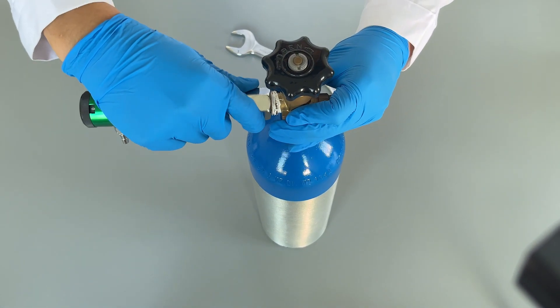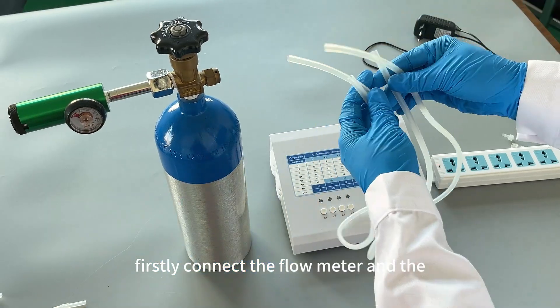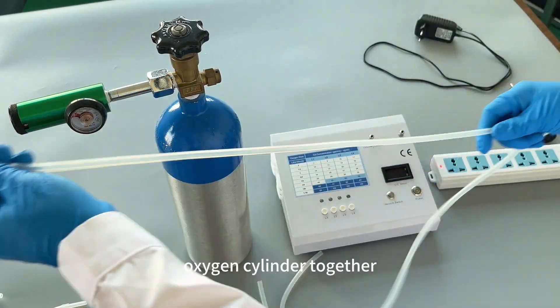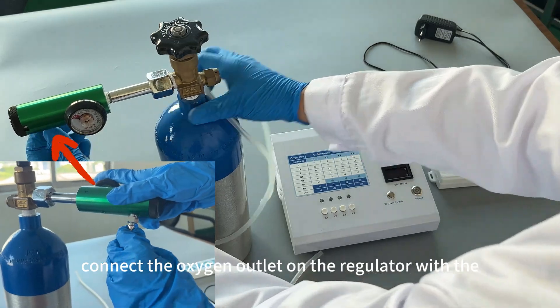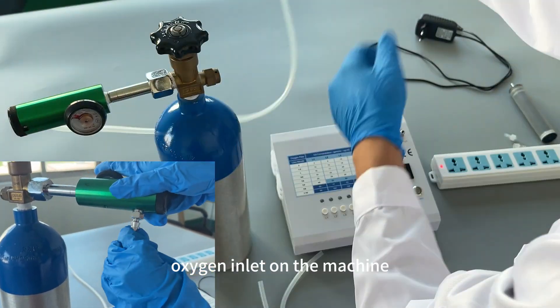Firstly, connect the flow meter and the oxygen cylinder together. Connect the oxygen outlet on the regulator with the oxygen inlet on the machine using a silicone tube.